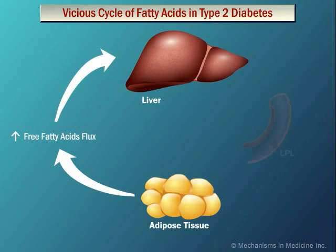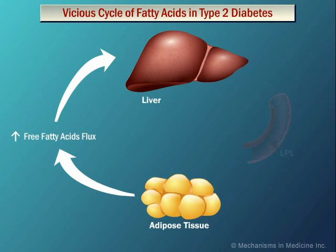The free fatty acids released by adipose tissue become elevated in the bloodstream. These free fatty acids are then taken up by the liver, resulting in a vicious cycle.